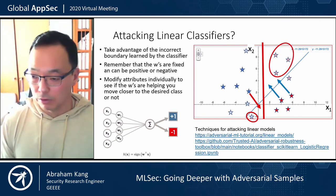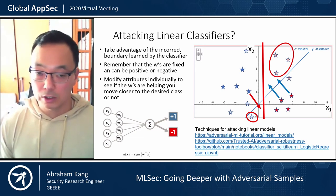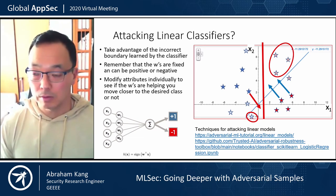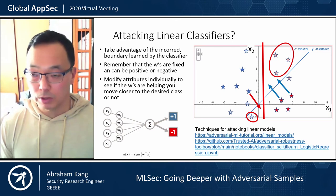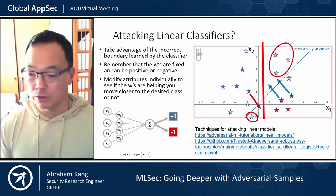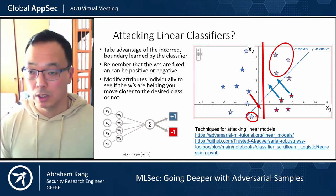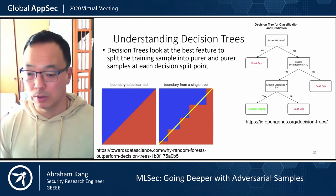If you're looking for examples, there are links where you can try this out — they have notebooks for you to experiment with. The IBM Adversarial Robustness Toolkit has a number of nice attacks and defenses.